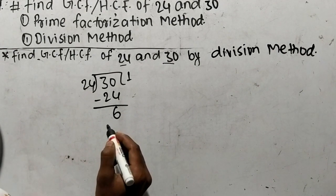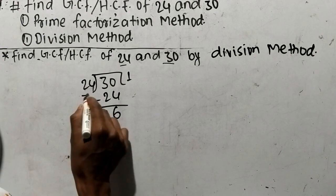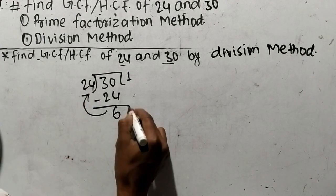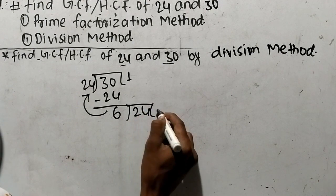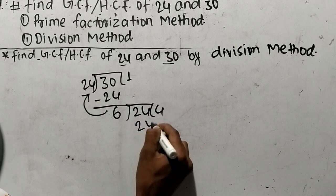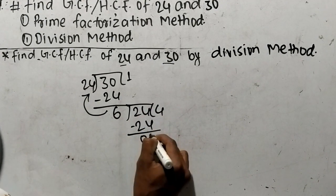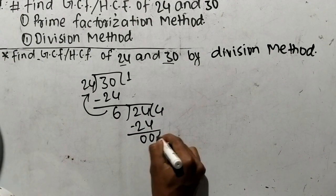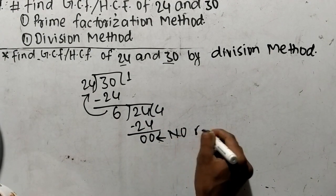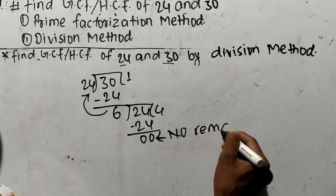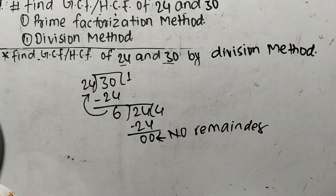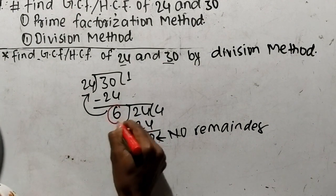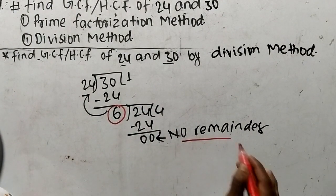When a remainder comes, we again divide the divisor with the remainder. So 6 divides the divisor 24: 6 x 4 = 24, and at last we have remainder 0. So the divisor 6 gives no remainder.